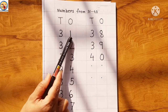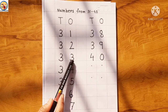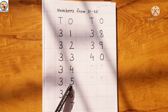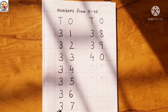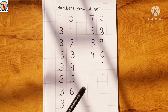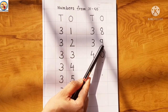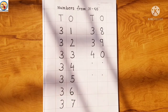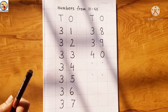Let's count one more time: 31, 32, 33, 34, 35, 36, 37, 38, 39, 40. So children, today we have learned how to count and write numbers from 31 to 40. Keep practicing and keep learning with fun!